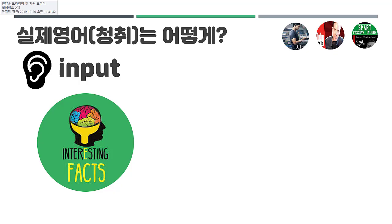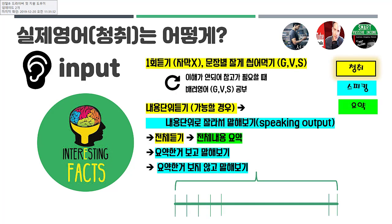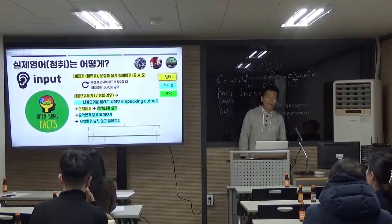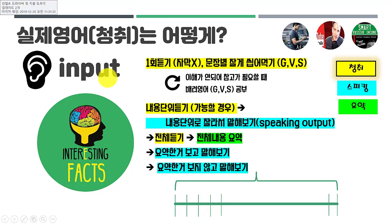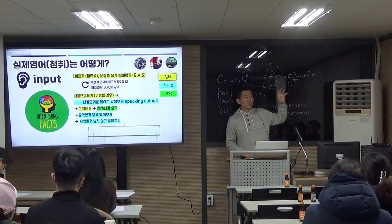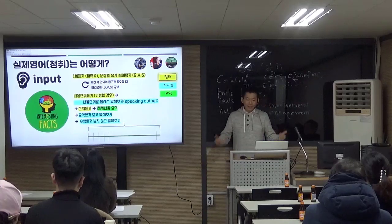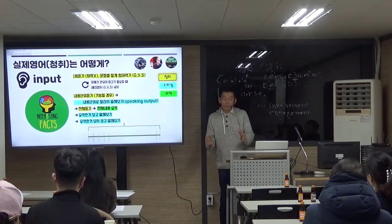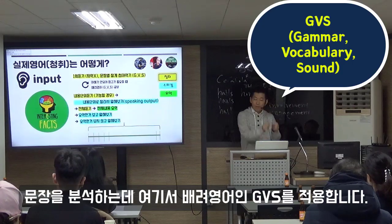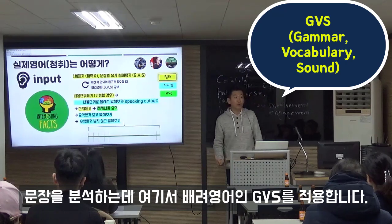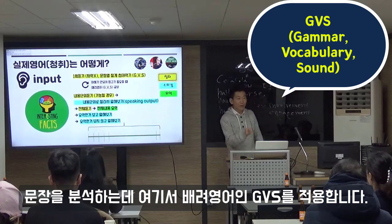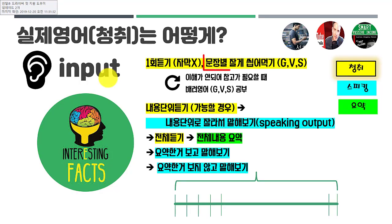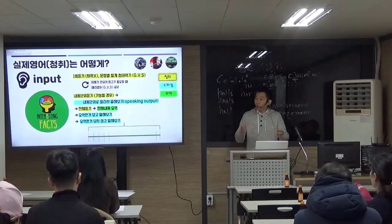그러면 어떻게 해야 될 것인가? 간단해요. 일단 클립을 가지고 공부하는 건데, 첫 번째는 자막 없이 듣는 겁니다. 자막 없이 딱 들어요. 그런 다음에 문장을 좀 분석할 필요가 있어요. 한 문장 딱 듣고 바로 안 들어오잖아요, 그럼 분석을 해 들어가는 겁니다. 여기 보시면 GVS라고 나왔죠. 베리 영어잖아요. G가 Grammar, V가 Vocabulary, S가 Sound죠. 이 세 가지를 가지고 분석을 하는 거예요. 제 수업 시간에도 많이 해주죠. 여러분들이 스스로 공부할 때도 이거 분석을 하는 겁니다.